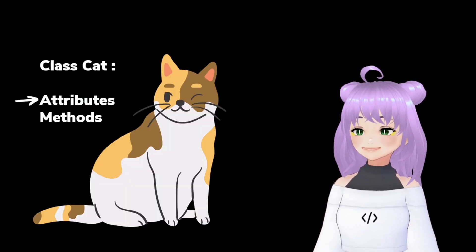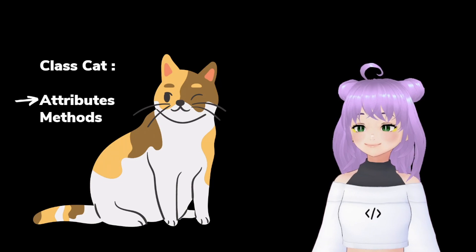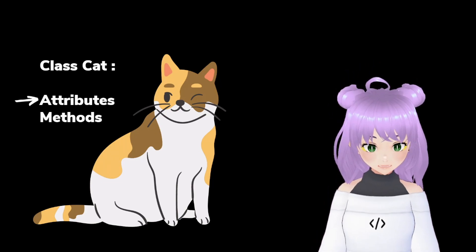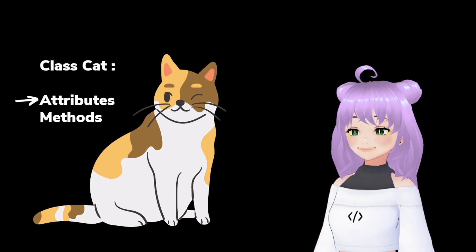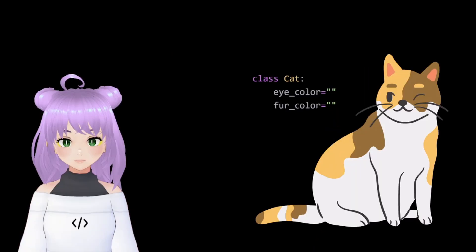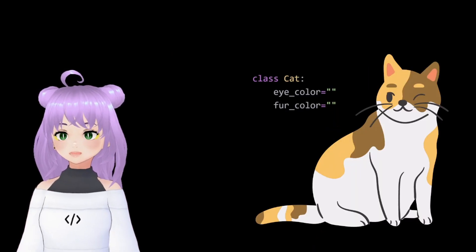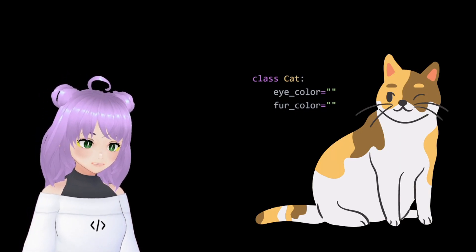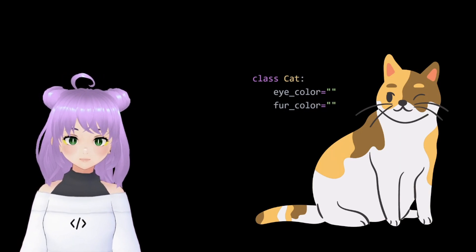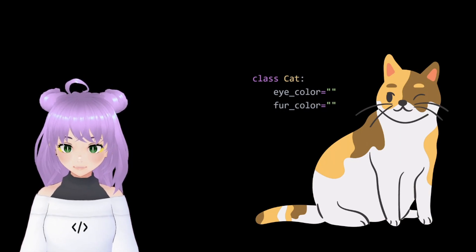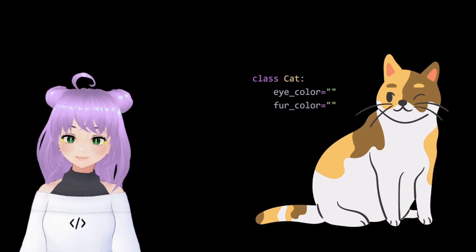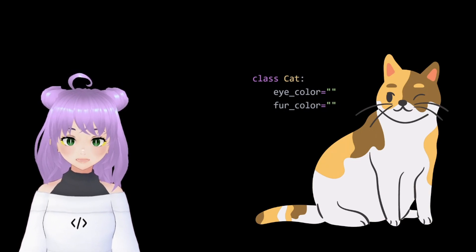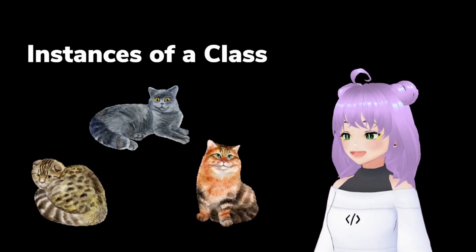And now, let's continue learning. Do you remember that our class was completely empty? Well, let's start by defining some attributes. Instead of leaving our class empty, we are going to add two attributes — eye color and fur color — followed by empty strings, because remember that this is just a template. We are going to work on objects in a moment.